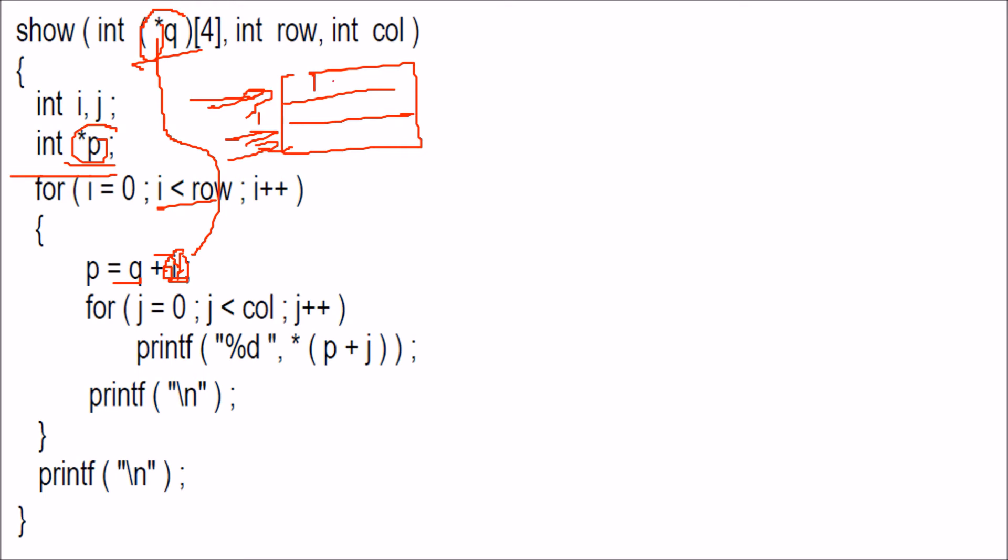In order to navigate inside the column, we have to go inside and say p plus j, because this is the column number. So p plus j and the value at p[j], all these values will be shown.